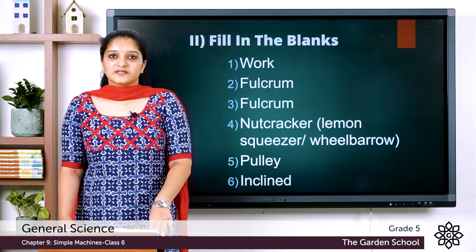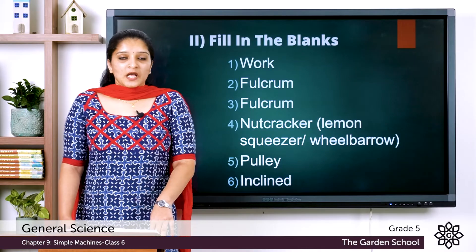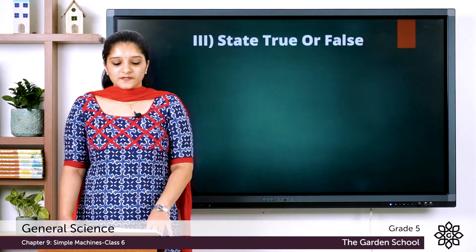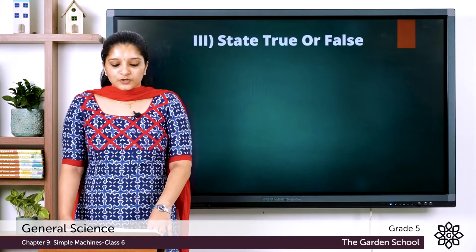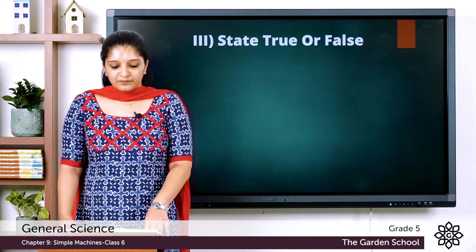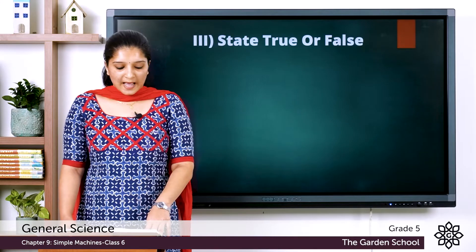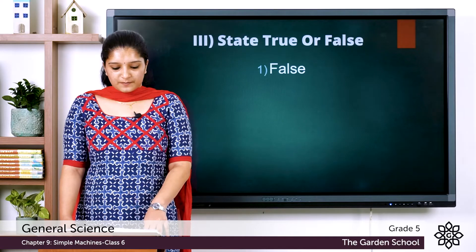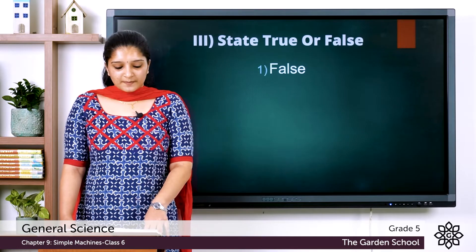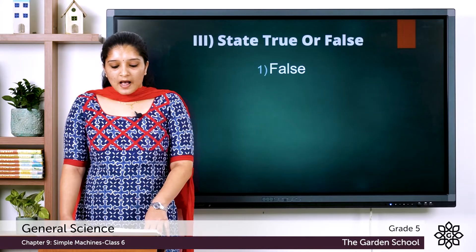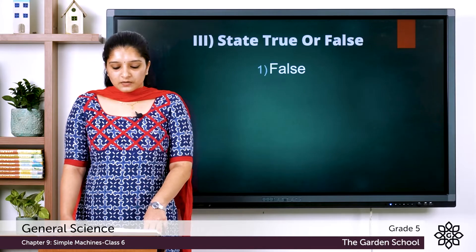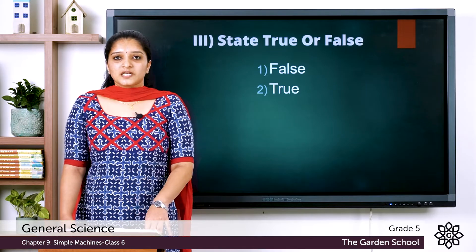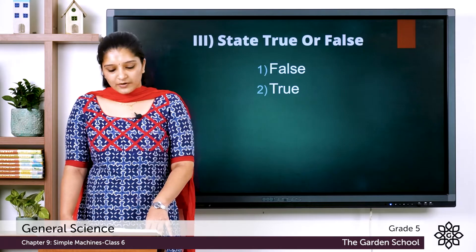In the next set of questions, several statements are given and you have to state whether they are true or false. The first statement: when you try to push a wall, you do work even if it doesn't move. The answer is false, because for work to be done there should be displacement. The next statement: a second class lever has a load between the fulcrum and effort. The answer is true. In a second class lever, the load lies between the fulcrum and effort.